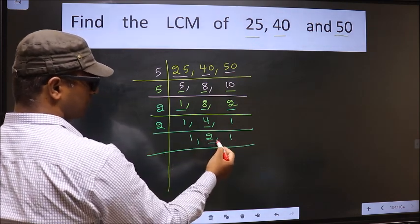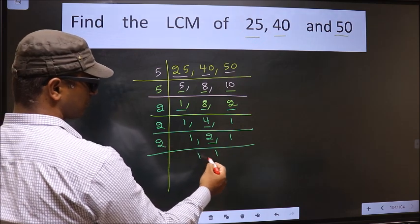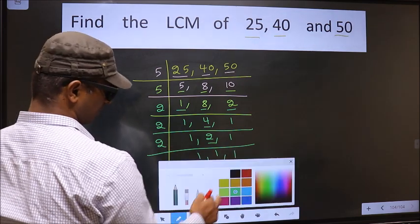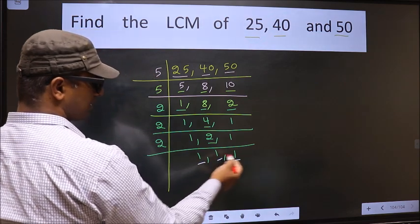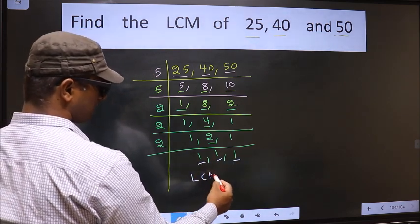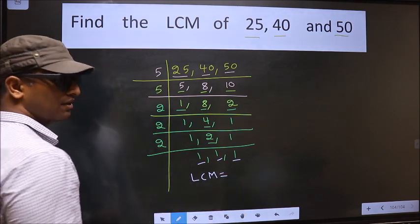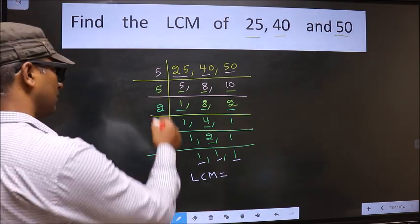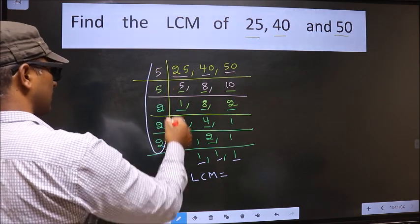Now, we have 2. 2 is a prime number, so 2 times 1 is 2. We got 1 in all three places. So our LCM is the product of these numbers.